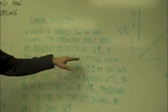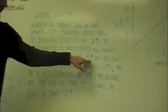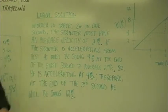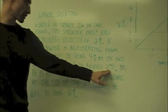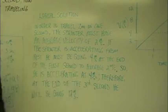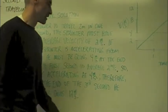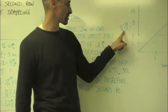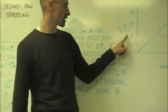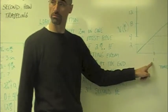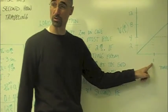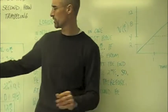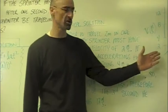So the sprinter must be going four meters per second at the end of the first second to average two meters per second. He's accelerating at four meters per second squared. He went from zero to four—a change in velocity of four meters per second in one second. You can solve it logically this way.